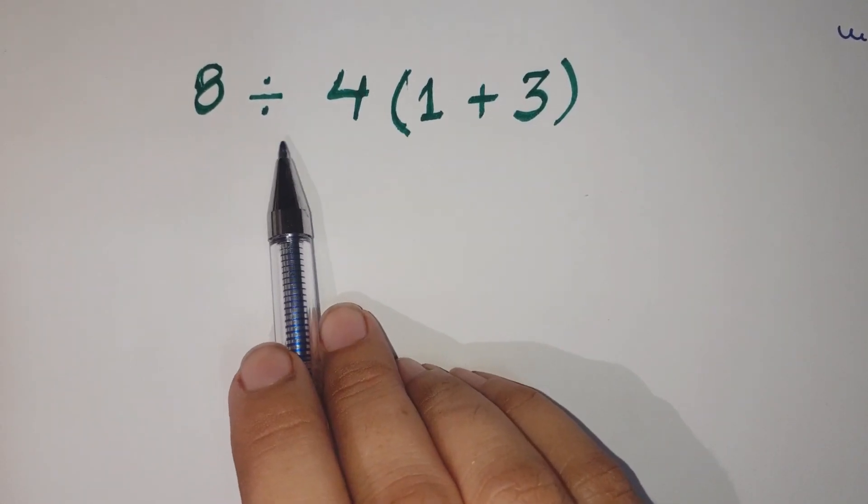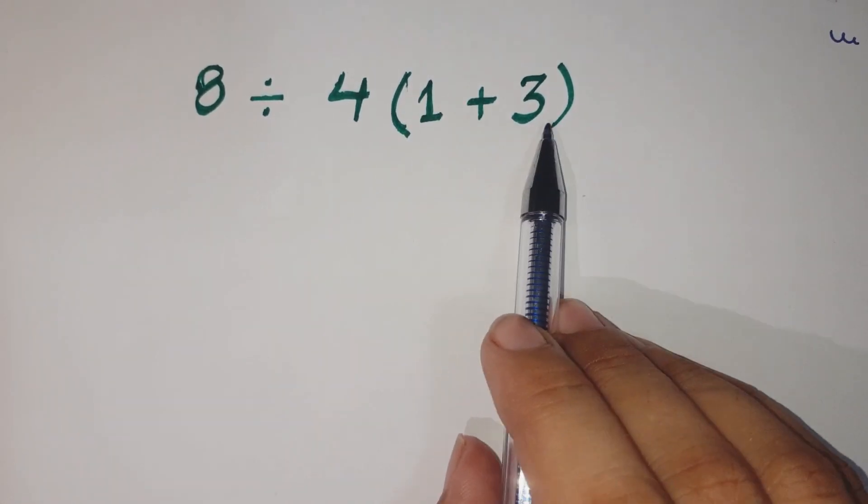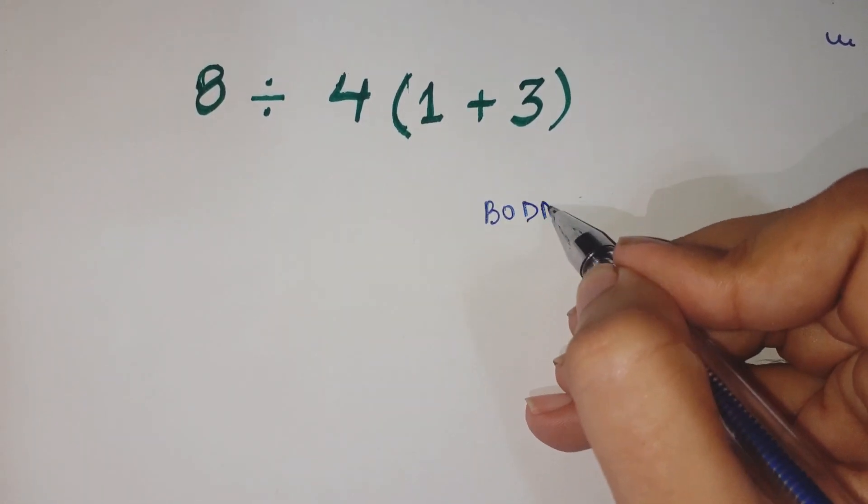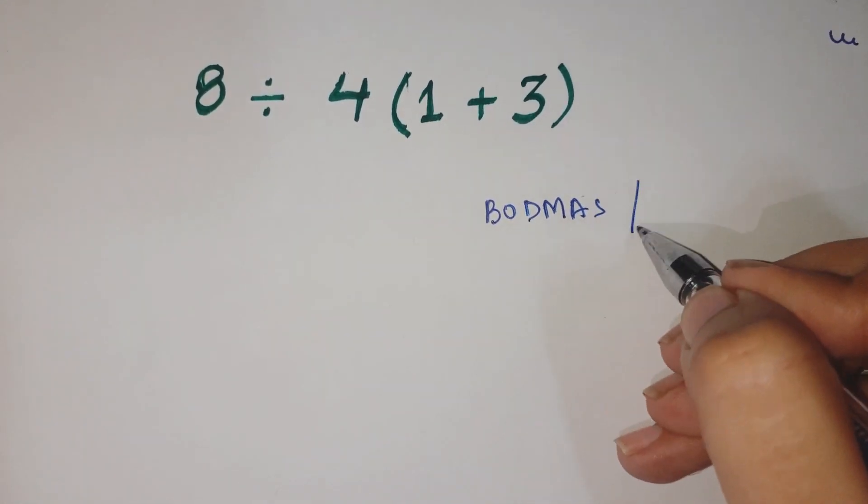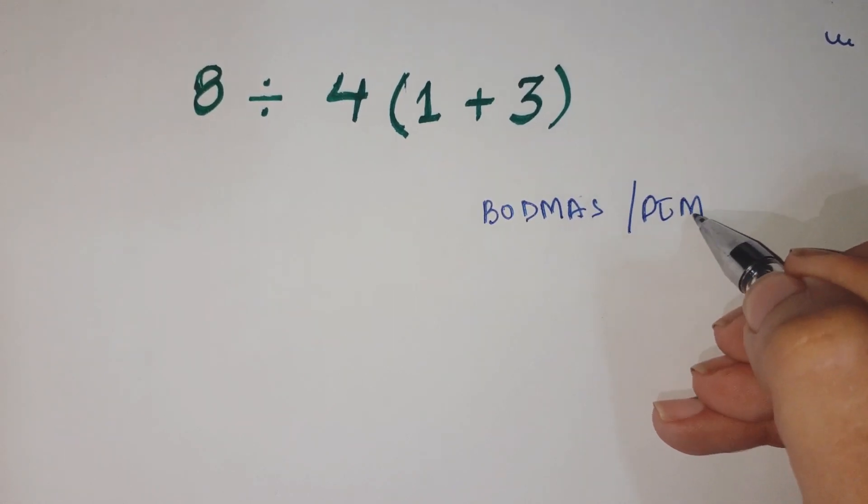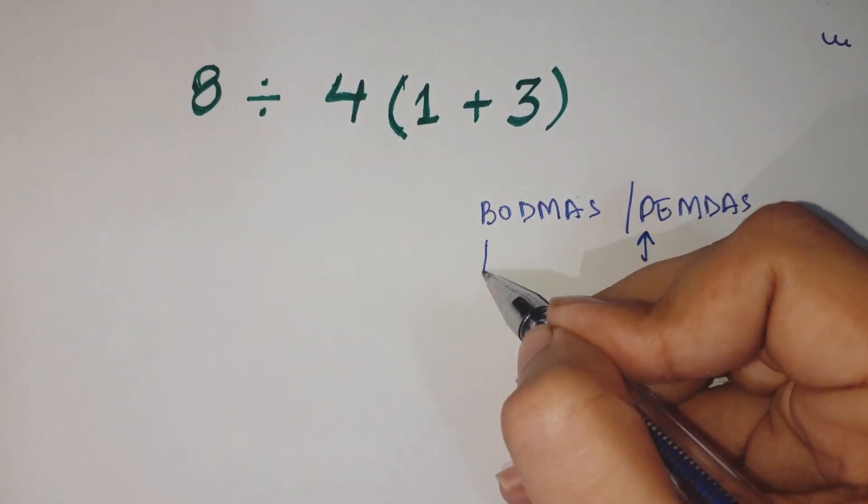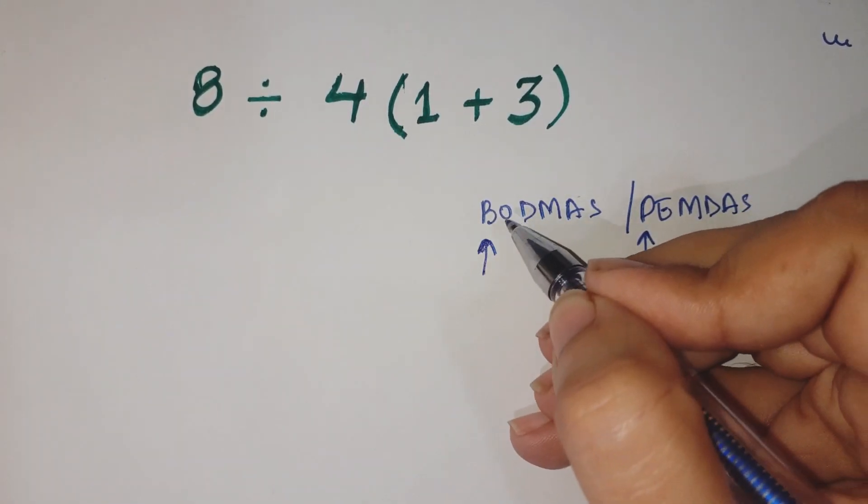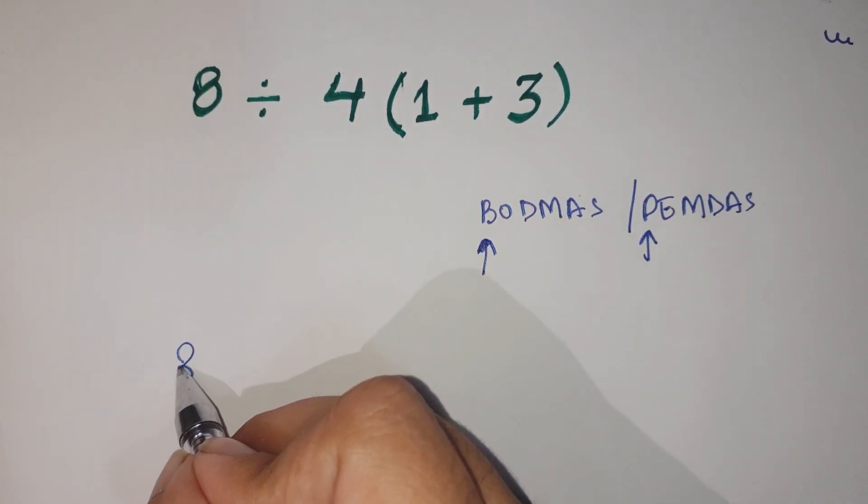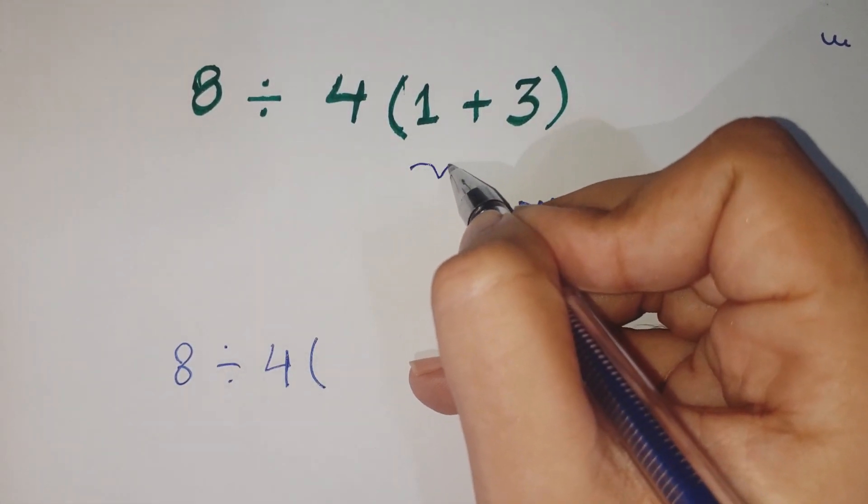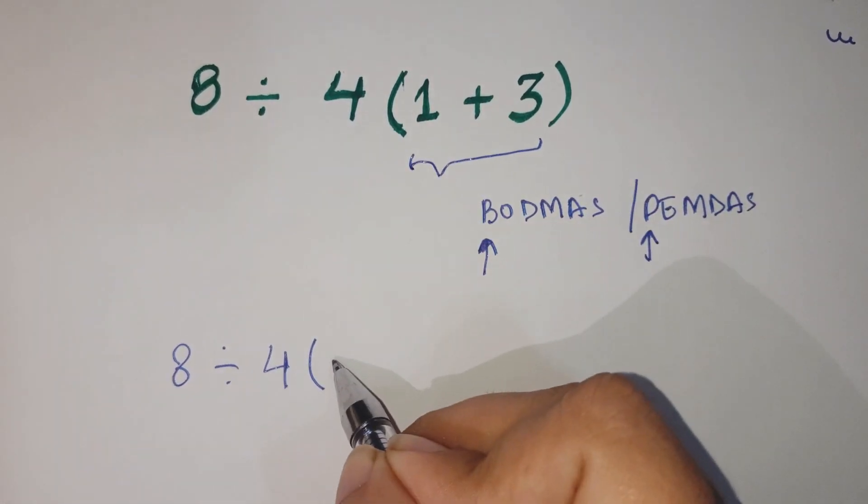The question is 8 divided by 4 bracket 1 plus 3. Now according to the BODMAS or you can say the PEMDAS rule, we have to solve the parenthesis or the bracket first. So what we are going to do, we are going to solve 1 plus 3 at first. So here you get 4.